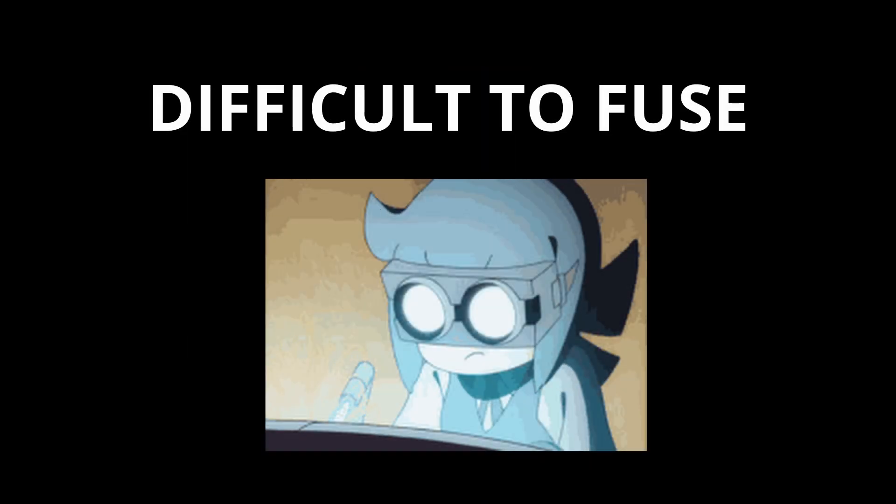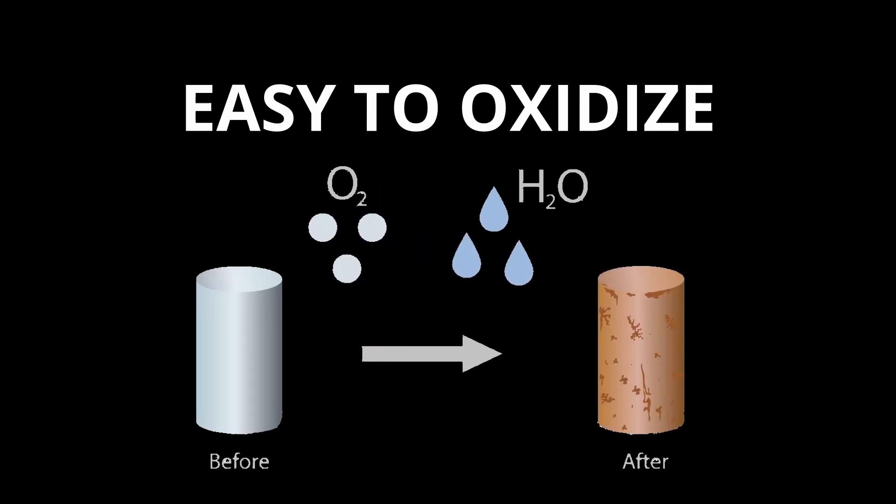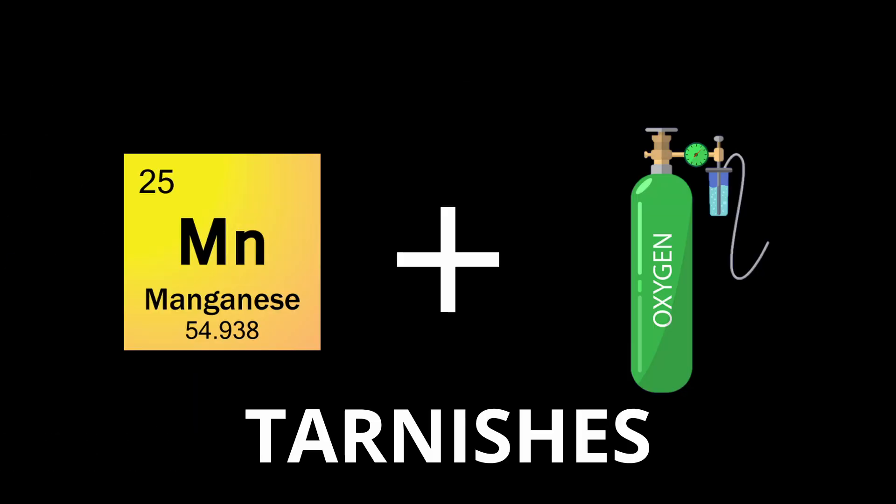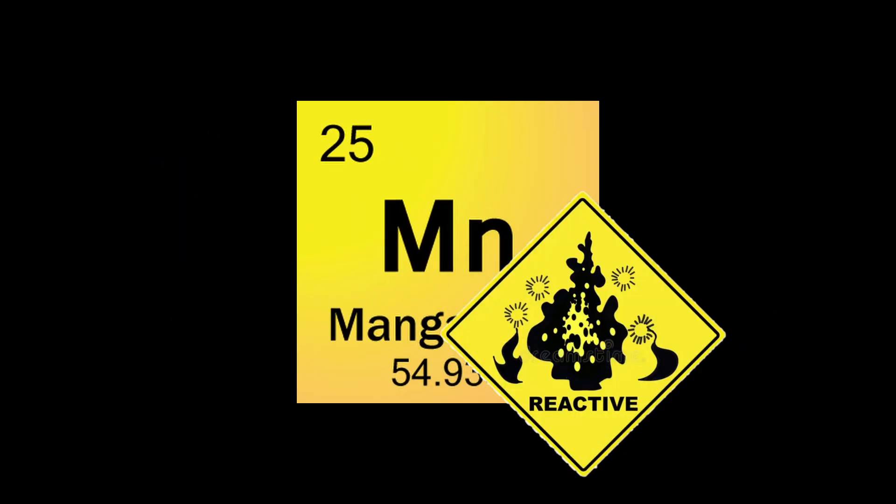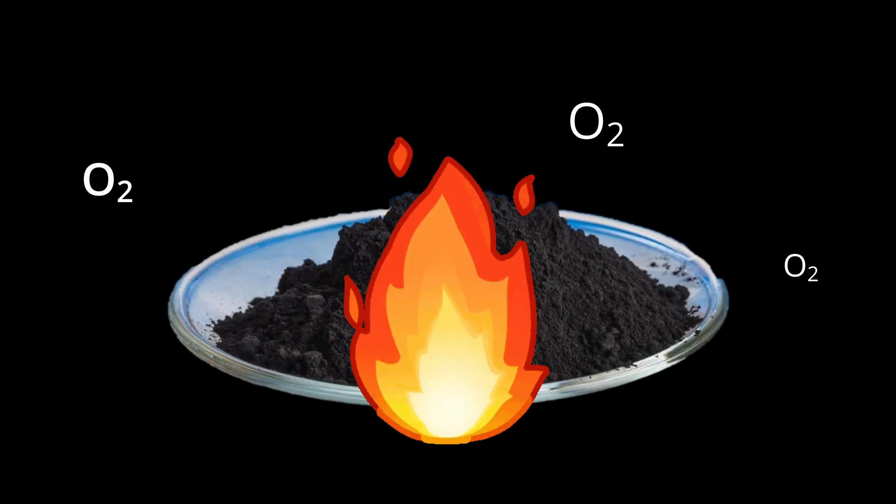It is a hard but very brittle metal that is difficult to fuse but easy to oxidize. Manganese tarnishes slowly in air and rusts like iron in water. It's also reactive when pure, burning in oxygen in its powder form.